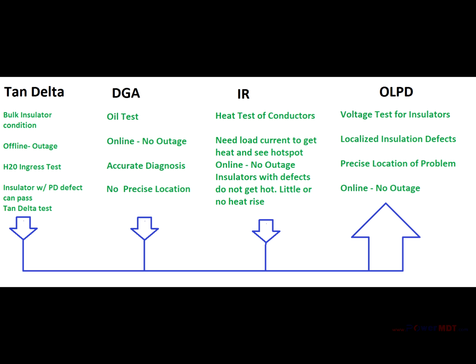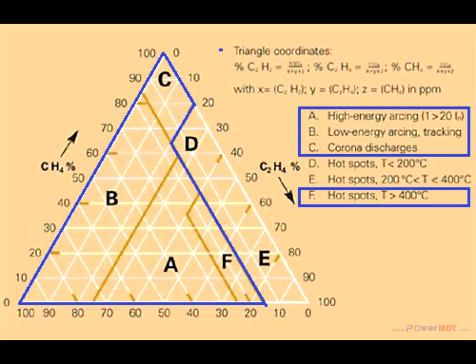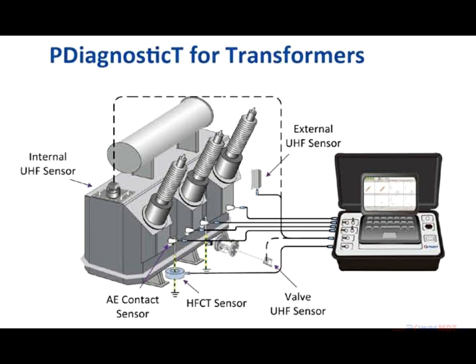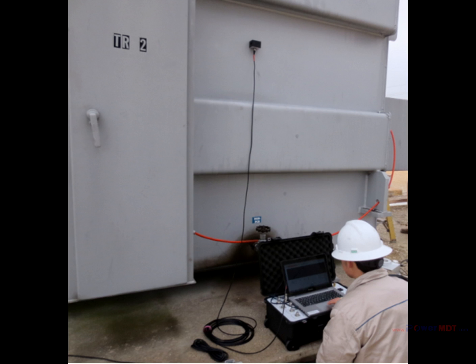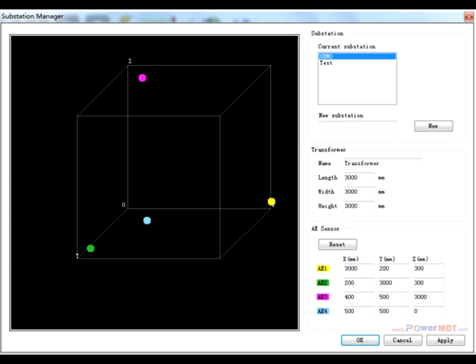Partial discharges can occur in various dielectric mediums such as oil, porcelain, resins, and polymers. DGA tests play a key role in identifying many issues in transformers and other oil-filled equipment. However, when acetylene and arcing gases are rising, the precise location of the issue remains unknown. In this situation, 3D acoustic triangulation can be used to determine the precise location of the discharge.